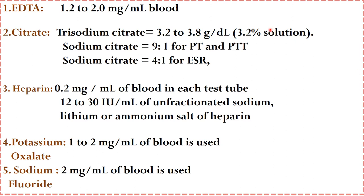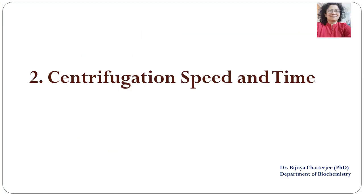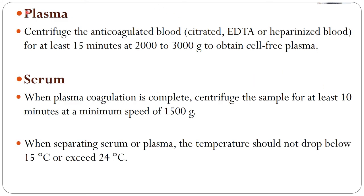These are the ratios that have to be maintained at any cost, and depending upon the size of the vacutainer, the same amount of blood has to be collected. If the amount of blood collected is less or more compared to the anticoagulant present inside the vacutainer, it is going to hamper the quality of the plasma or serum. The second factor that influences the quality of the sample is centrifugation speed and time. In case of plasma, the centrifugal speed should be 200 to 300 g and it should be centrifuged for at least 15 minutes so that a cell-free plasma is obtained.